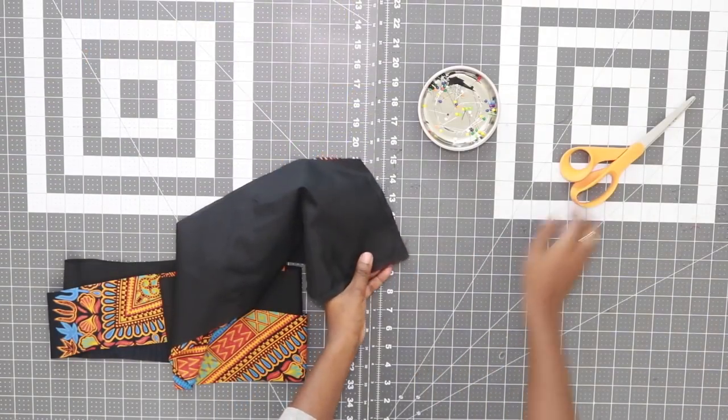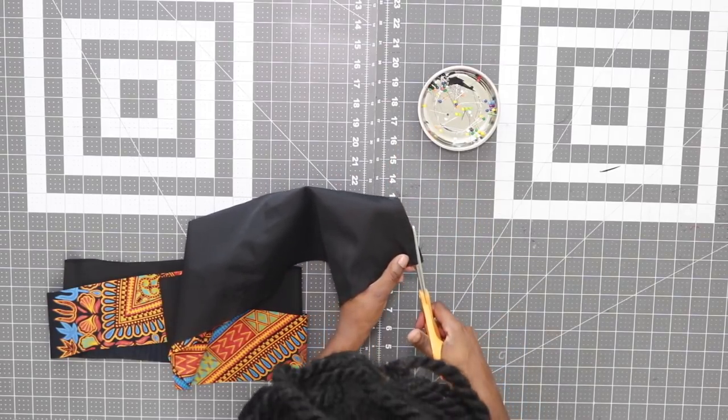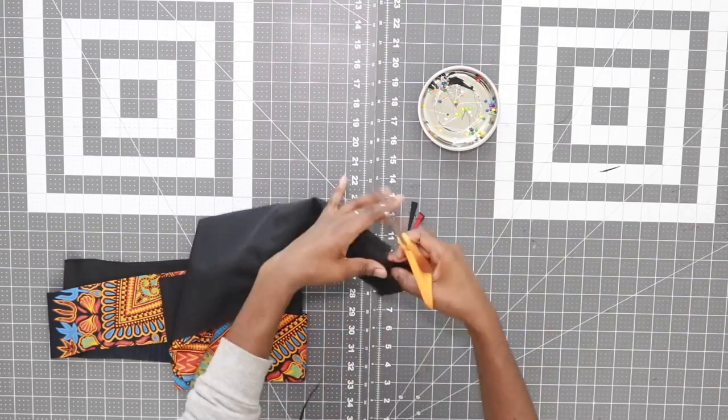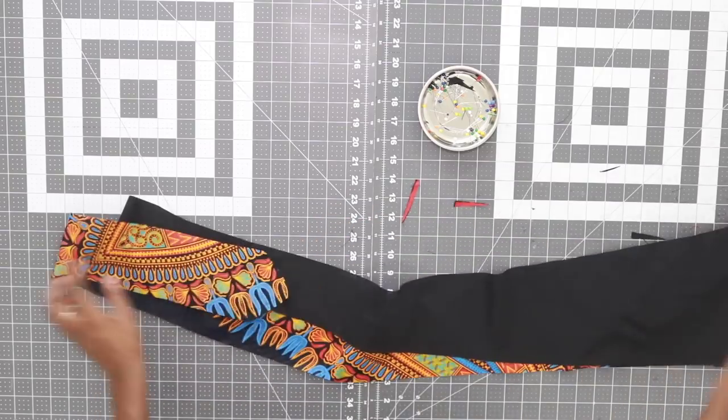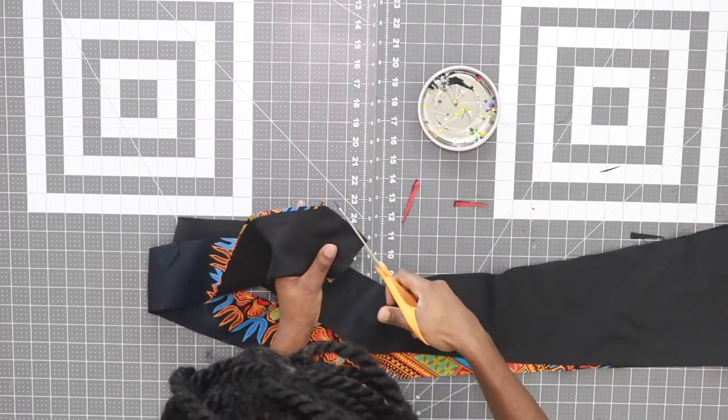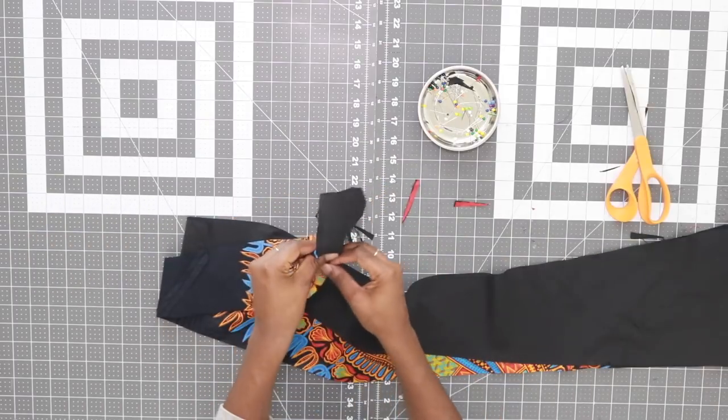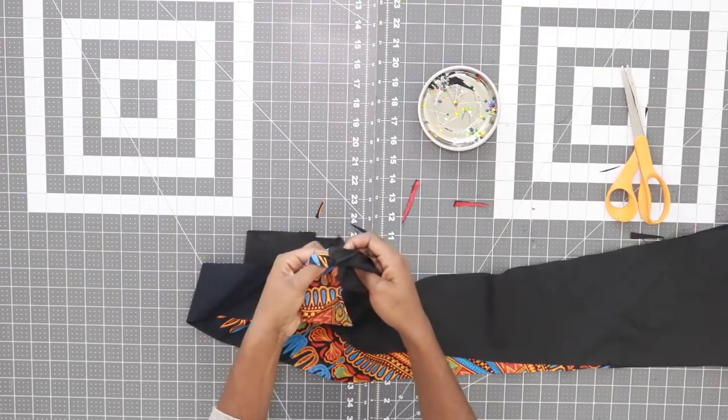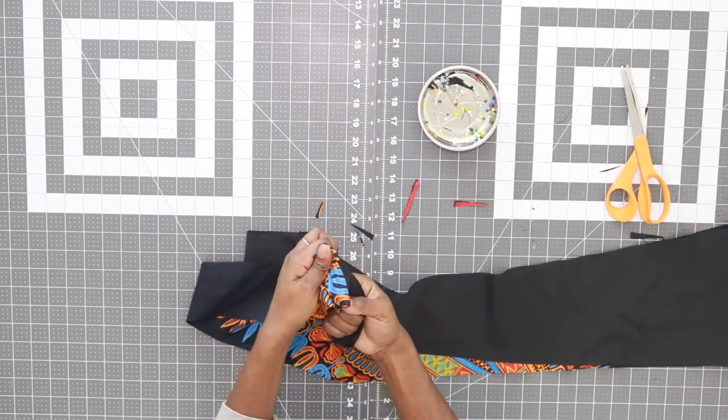Next, right at that point, we're going to trim it down. Next you can go ahead and turn it to the right side facing out and go ahead and push out that point. I'm using my finger.